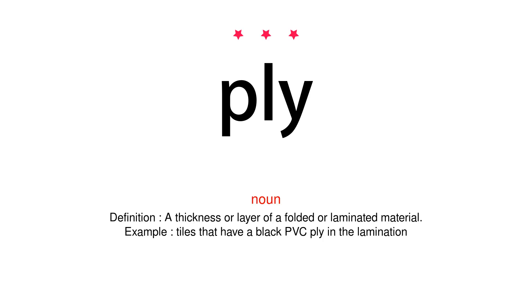Ply. Noun. Definition: a thickness or layer of a folded or laminated material. Example: tiles that have a black PVC ply in the lamination.